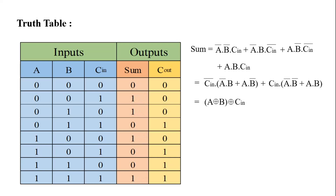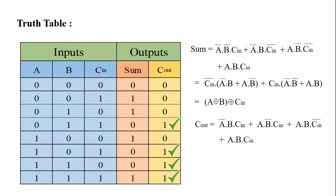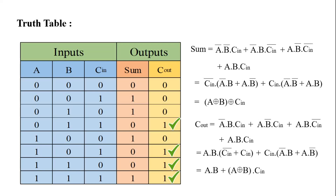And COUT equals A bar dot B dot CIN. After simplification we get COUT equal to A dot B dot CIN. Now we look at the circuit diagram.